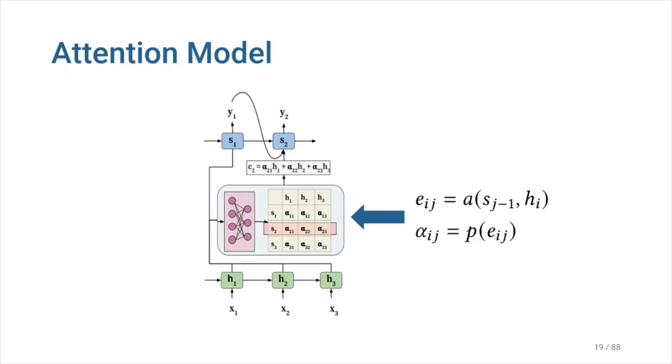As it scores how relevant is the candidate state, hi for the query state, sj-1. This alignment function outputs energy scores, Eij, which are then fed into the distribution function, denoted by p, which converts the energy scores into attention weights. This distribution function most generally is the softmax function.